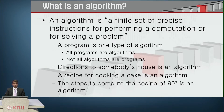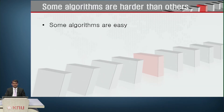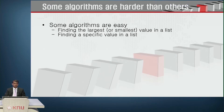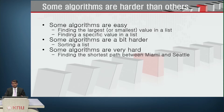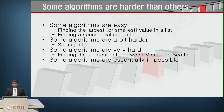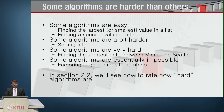Even the steps to compute cosine of 90 degrees is an algorithm. Some algorithms are easier than others — finding the largest or smallest value in a list is quite easy, while sorting a list is harder depending on its size and complexity. Finding the shortest path between Miami and Seattle is harder still, and some algorithms are essentially impossible, like factoring large composite numbers.